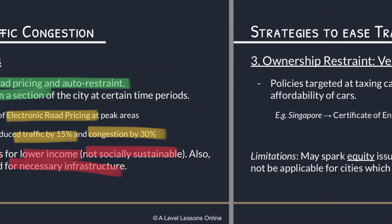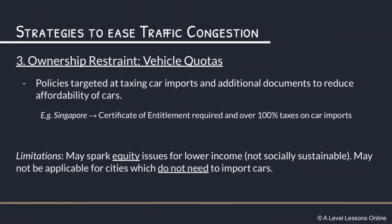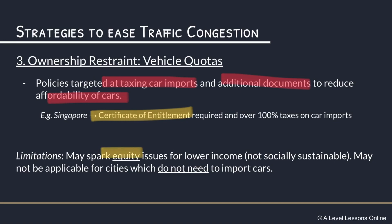Ownership restraint aims to limit the number of car owners by placing quotas on vehicles. It targets car imports and requires additional charges or documents to reduce the affordability of cars. In Singapore, the Certificate of Entitlement (COE) is very expensive and without it you cannot own a car. Limitations include equity issues due to high costs, and in cities that manufacture their own cars or have abundant natural resources, importing cars may not even be necessary, making this strategy less feasible.